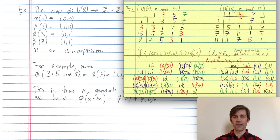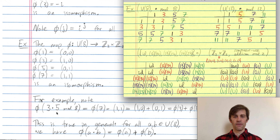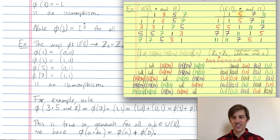Let's check that for a = 3 and b = 5. When I take 3 and 5 and combine them in U8, I get 7. When I map 7 over, I get (1,1). That should be the same as mapping 3 and 5 over to get (1,0) and (0,1), and then adding them in Z2 cross Z2 to get (1,1). Either way I get (1,1), so this makes me happy. It turns out to be true for all a and b — this map does preserve the group operation.